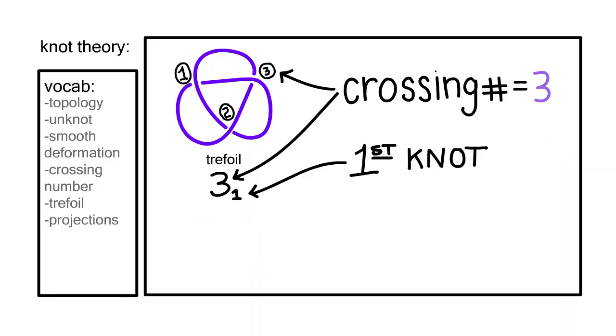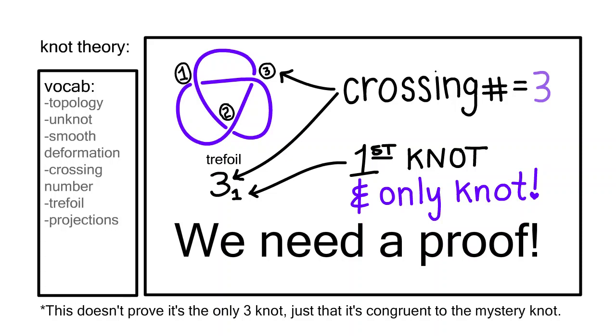The trefoil is also the only unique knot with a crossing number of three, but we need a proof. What about this knot? That would make two, right? How can we tell if they're the same?